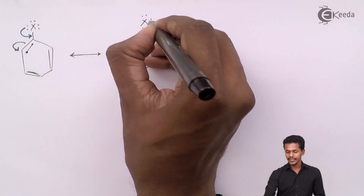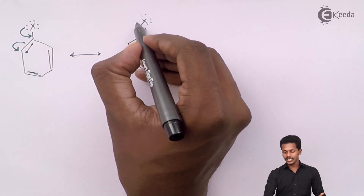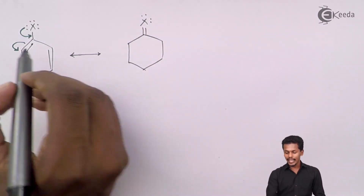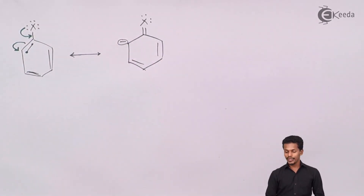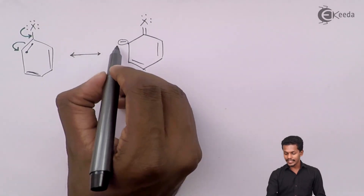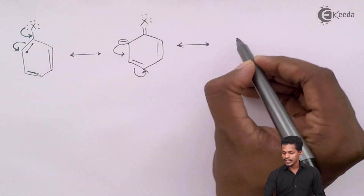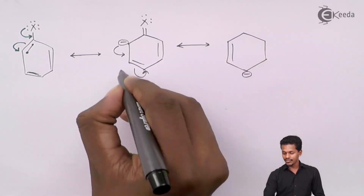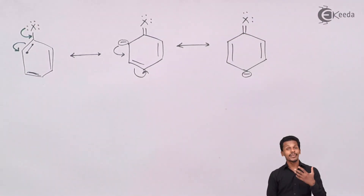This is represented with two lone pairs of electrons remaining as they are, while one electron has moved on to the carbon atom so as to form a carbon-halogen double bond, causing that carbon to acquire a negative charge. Again, delocalization of electrons takes place in such a manner that this electron forms a resonating structure very similar to this one, where a different carbon acquires a negative charge, and this is the double bond character we can see for the carbon and halogen atom.